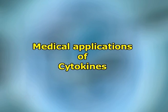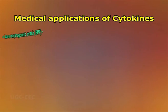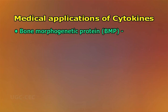Regarding medical applications of cytokines: some cytokines have been developed into protein therapeutics using recombinant DNA technology. Recombinant cytokines being used as drugs as of 2014 include: bone morphogenetic protein (BMP), used to treat bone-related conditions; erythropoietin (EPO), used to treat anemia; granulocyte colony stimulating factor (G-CSF), used to treat neutropenia in cancer patients.